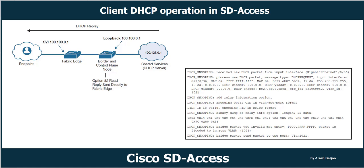The response from the DHCP server is sent back toward the endpoint. The DHCP reply is first received by the fabric border, which has a loopback interface configured with the same IP as the anycast gateway. The fabric border reads Option 82 in the reply — containing the RLOC address and the Instance ID — and sends the DHCP response directly to the fabric edge. The fabric edge receives the reply, de-encapsulates the packet, and forwards the raw DHCP reply to the endpoint, completing the DHCP process.